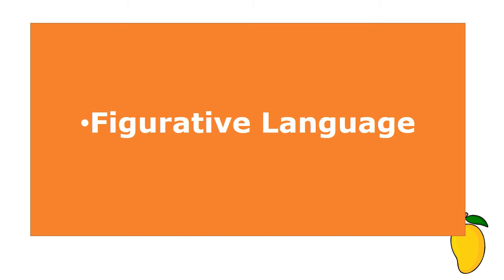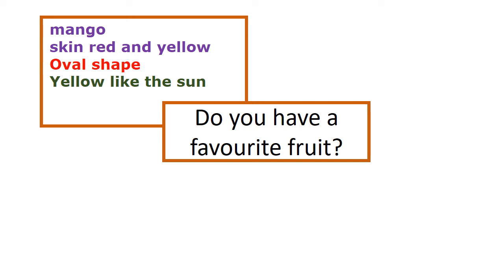Now, our figurative language. Can anybody remember what figurative language is? Figurative language is language that makes your writing more colorful. Remember, it uses two words — either 'like' or 'as' — and it compares two things. Let's look at the first figurative language we will write: yellow like the sun.